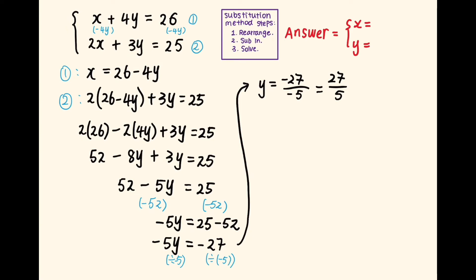Now we want to find x. It's important to pick which equation we want to sub the y value into. Since I already had an equation with x being the subject, I can use that equation to find x. Since I know x is equal to 26 minus 4y, to find x, I'm going to sub in y is equal to 27 over 5. So x is equal to 26 minus 4 times 27 over 5.